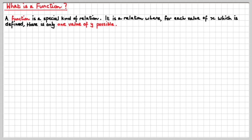Now what is a function? A function is a special kind of relation. It is a relation where for each value of x which is defined, there is only one value of y possible. Now that's the bit you've got to get.